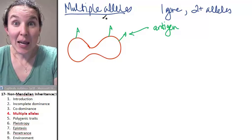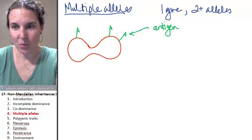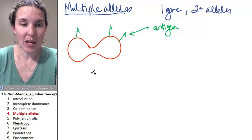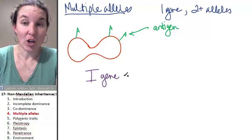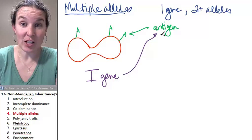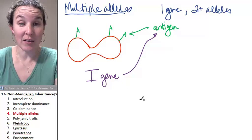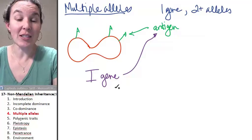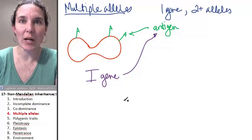And look, the blood type gene—for whatever reason, why did they do it this way? I have no idea. It's the I gene that codes for these little antigens. So if you have the I gene, you're going to have some kind of—well, let's just say the I gene codes for these specific antigens in red blood cells.